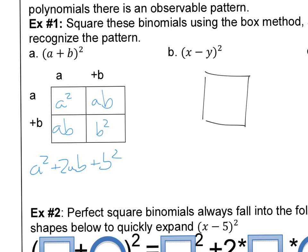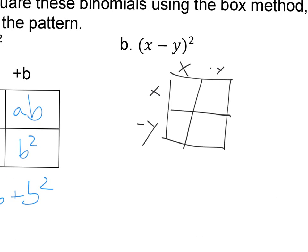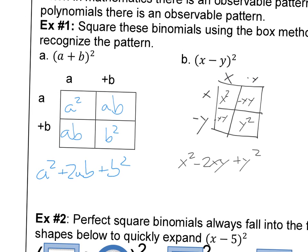Same idea with the box: x minus y times x minus y. We'd get x squared, negative xy, again a negative xy, and then negative y times negative y makes positive y squared. So we get x squared, two negative xy's — we can write that as negative 2xy — and then plus y squared.